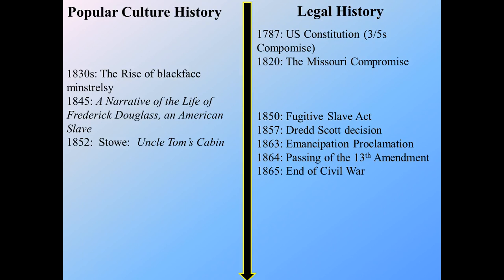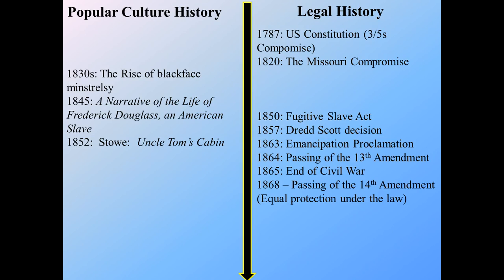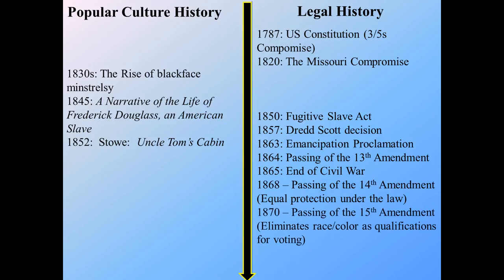In 1865, the end of the Civil War is a big step forward. In 1868 we get the 14th Amendment — a powerful amendment saying equal protection under the law. The problem is, while that law is there, we do not see equal protection under the law in practice. Some would argue even today we do not see equal protection when you compare rates of convictions between different populations. Then in 1870, the passing of the 15th Amendment eliminated race and color as qualifications for voting. We do see some really great laws being passed trying to undo the harm, but it's going to be extremely hard culturally because there's still going to be a strong pushback against this.